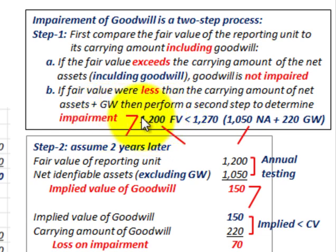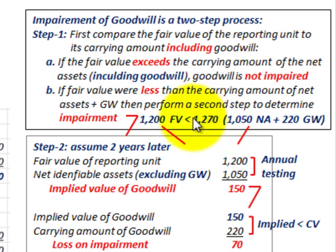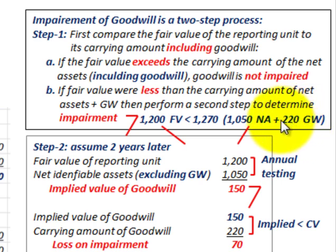For example, two years later we reassess business unit B to a fair value of $1,200,000. Its carrying value was recalculated to be $1,270,000 — that's net assets of $1,050,000 plus the original goodwill of $220,000. Since the fair value is less than the carrying value, we have a loss and can proceed to step two.